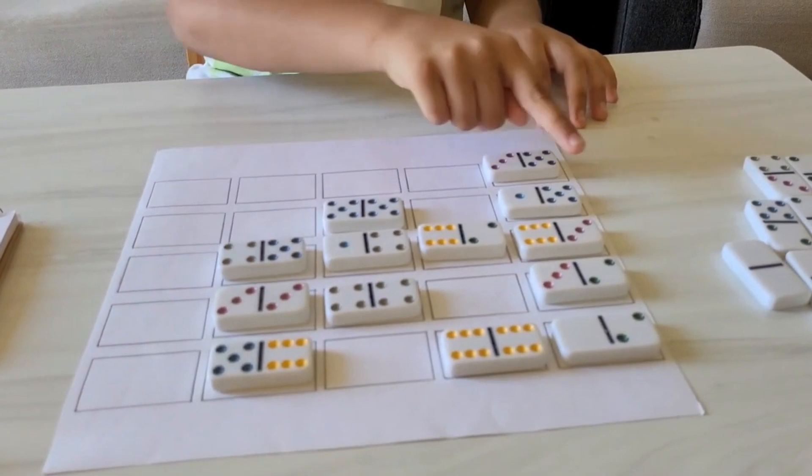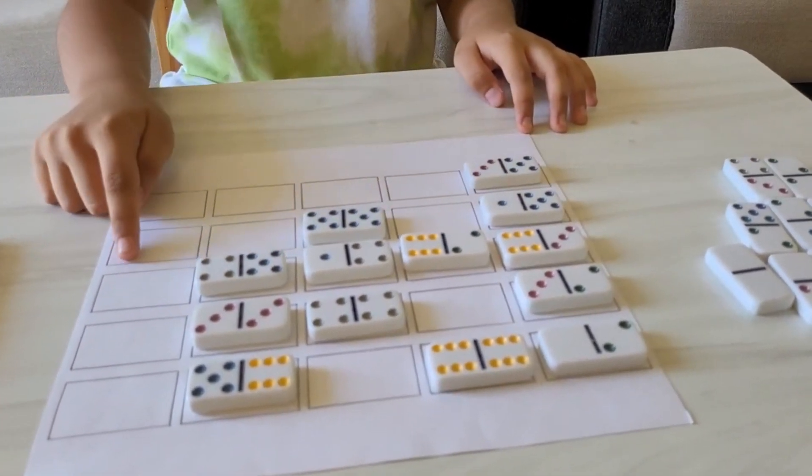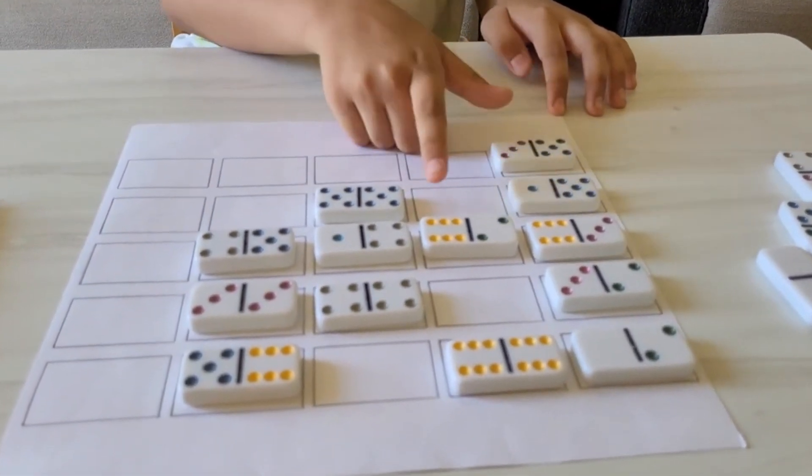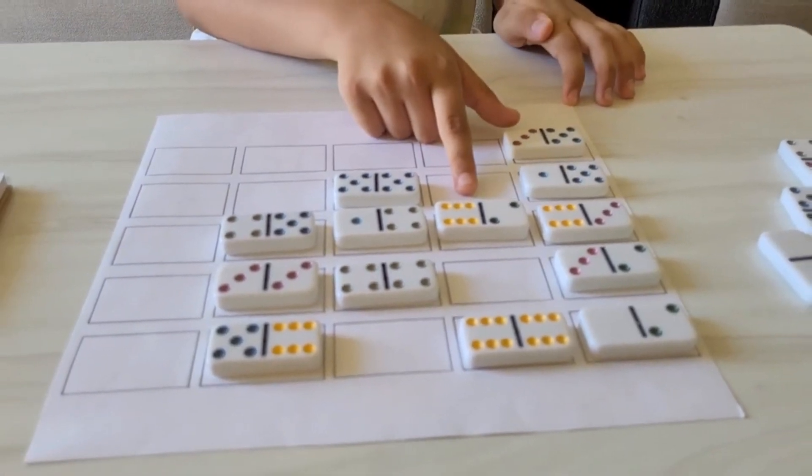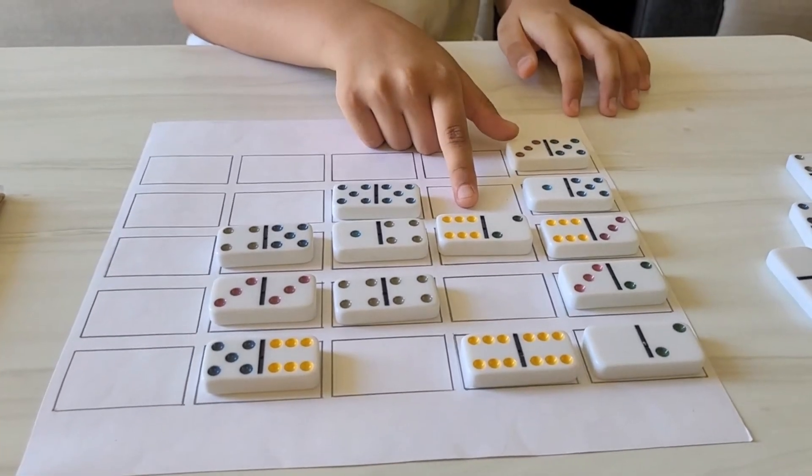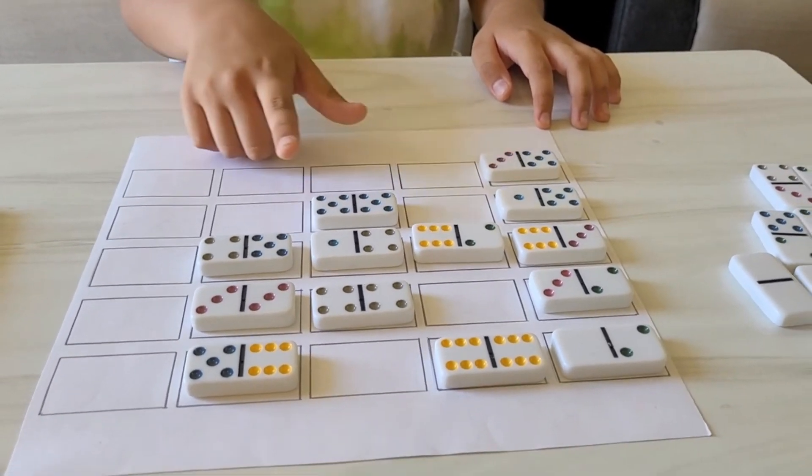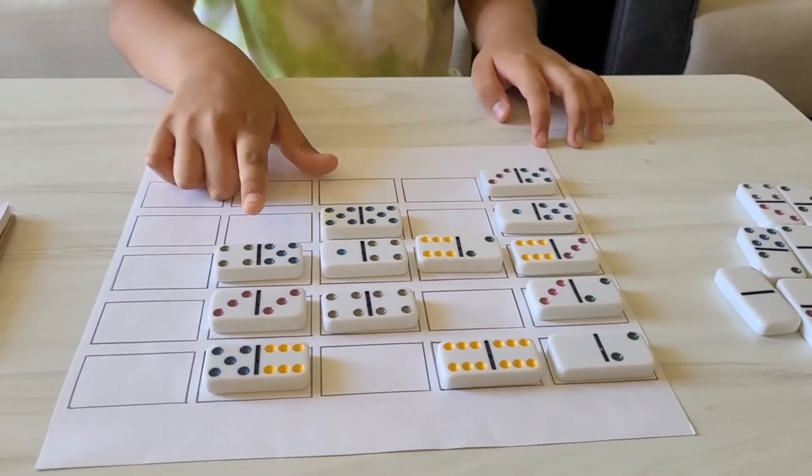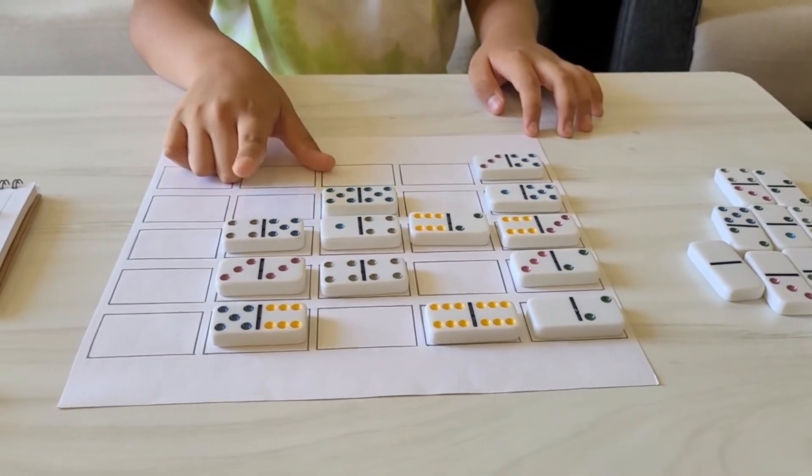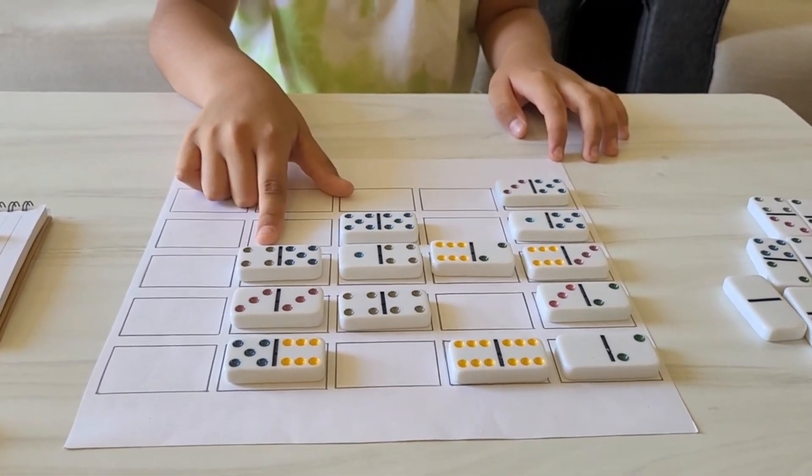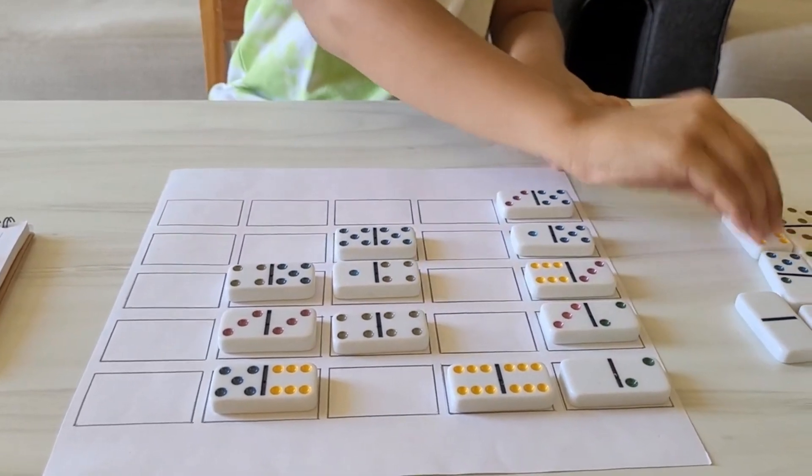9, okay. So now I am going to look at this one. 9 plus 8 is equal to 17, 17 plus 5 is equal to 22, 22 plus 9 is equal to 31. This row is a bit over, so I chose to remove this block.